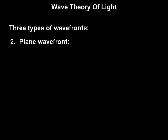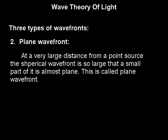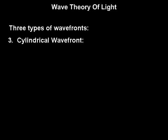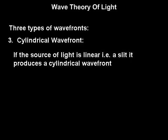The second type of wavefront is plane wavefront. At a very large distance from the point source, the spherical wavefront is so large that a small part of it is almost plane; this is called plane wavefront. Thus, the wavefront emitted by the sun is originally a spherical wavefront, but the wavefront which we receive on the earth is a plane wavefront. One more type of wavefront is the cylindrical wavefront. If the source of light is linear, i.e., a slit, it produces a cylindrical wavefront.